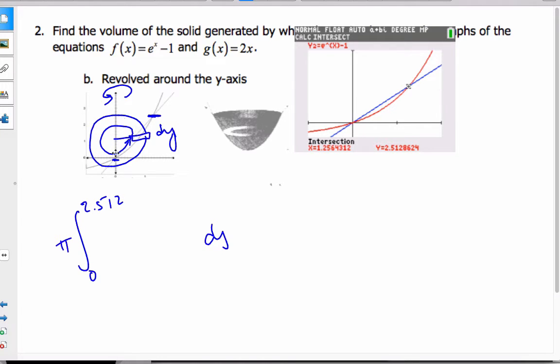And all these ones, I have to consider my function. I want the outside radius subtract the inside radius. The outside radius is y equals e to the x minus 1. I have to convert that, solve for x in terms of y. So I add the 1 and take the natural logarithm. So ln of y plus 1 is equal to x.